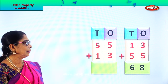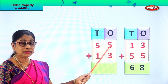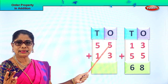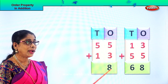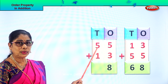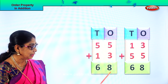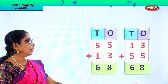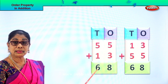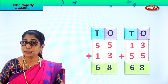Now let's add 55 plus 13. In the ones: 5 ones plus 3 ones — 5 in the mind, 3 on your fingers. After 5: 6, 7, 8. You get 8 ones. Then 5 tens plus 1 ten: 5 plus 1 is 6 tens, so you get 68. Whether you add 13 plus 55 or 55 plus 13, your answer is the same — 68. Order property of addition!